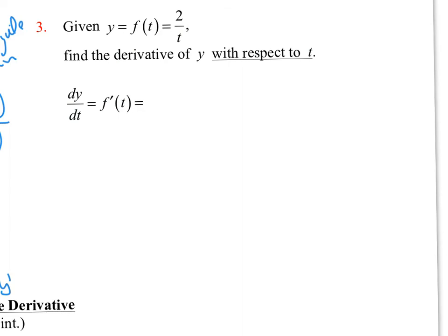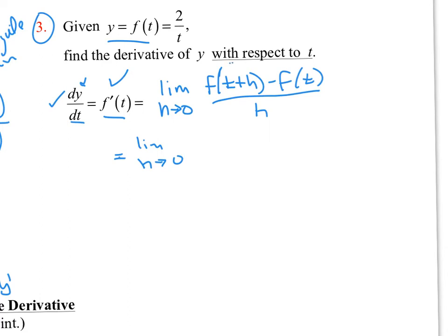For number 3, we have different notation: y is equal to f of t. We can find dy/dt, which we also write as f prime of t. The denominator is the independent variable we're dealing with, and the numerator y is the dependent variable. That's how we write it — change in y over change in t, or f prime of t. Starting with the definition of the derivative, we now use t rather than x, and h is the small change in t.